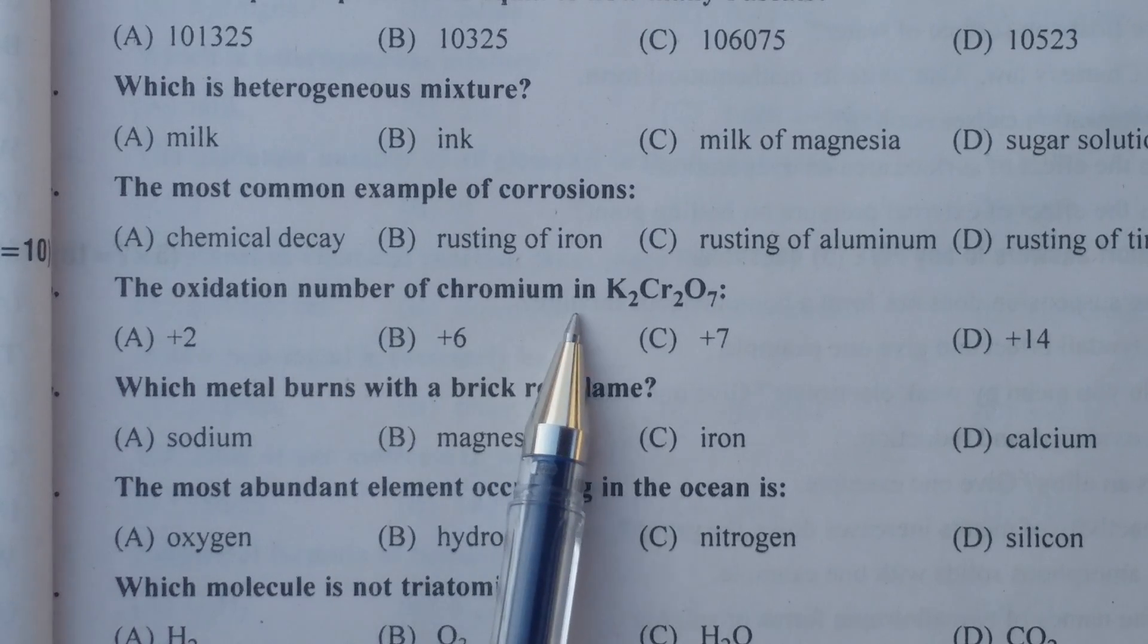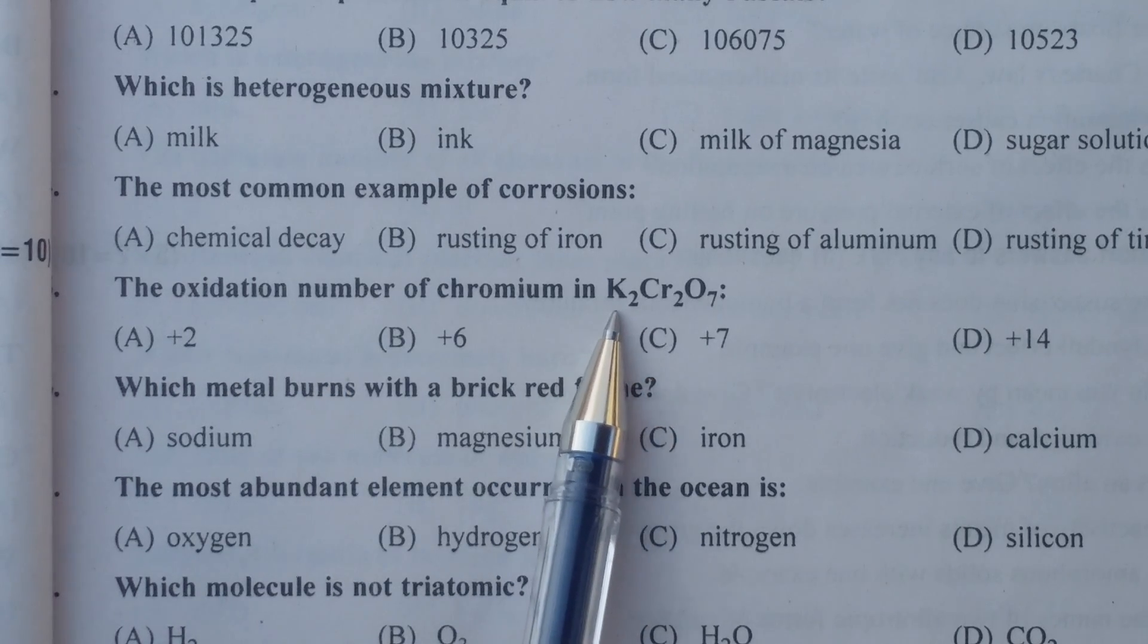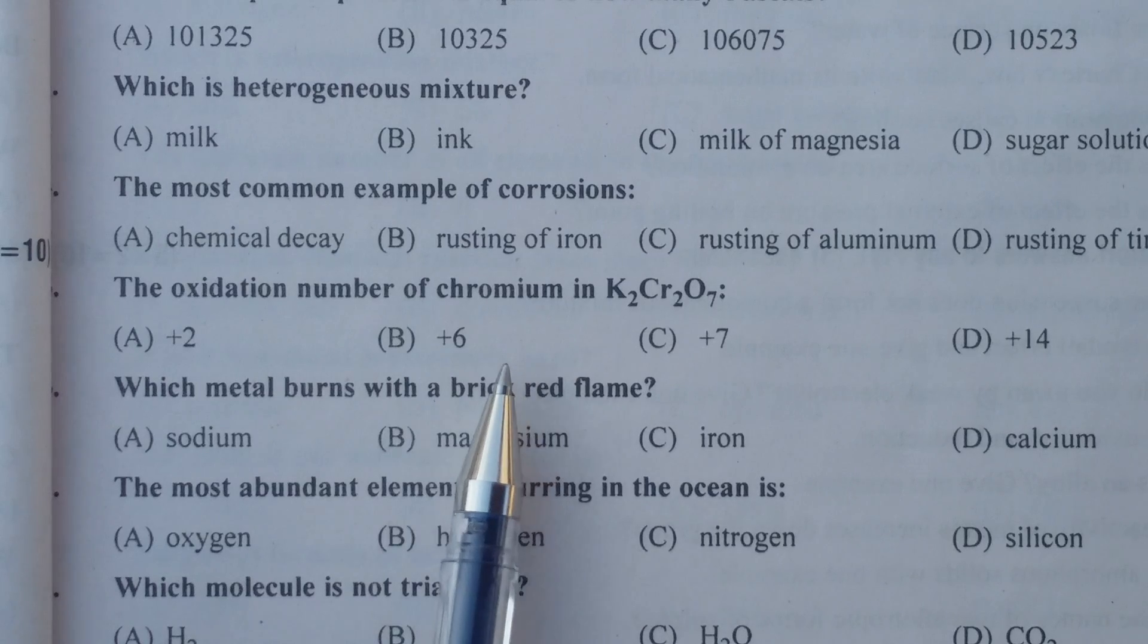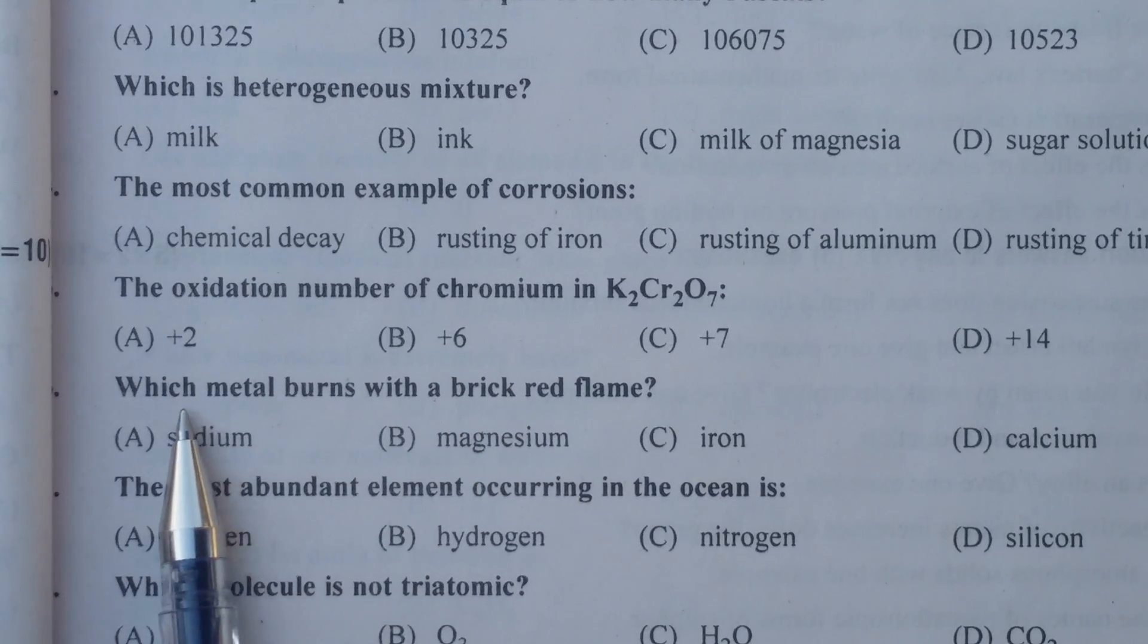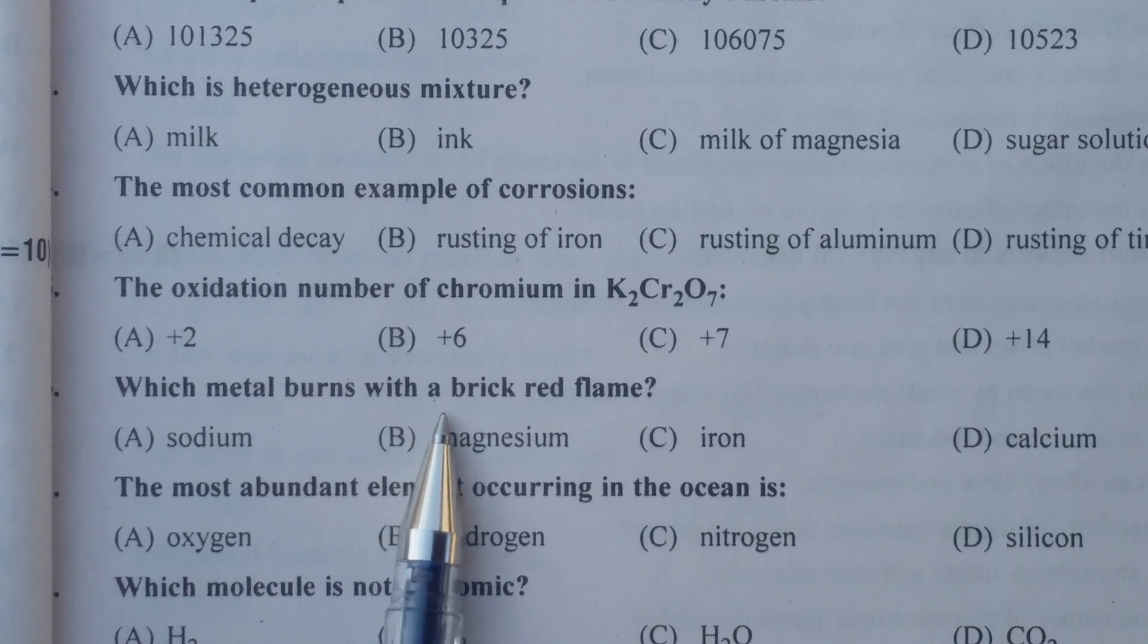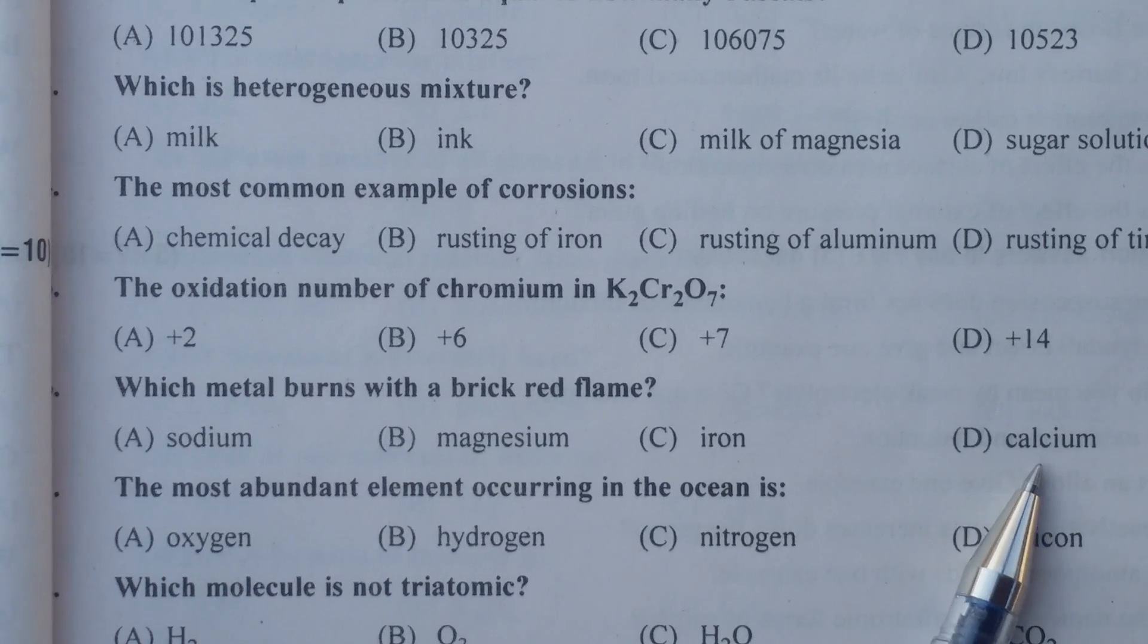The oxidation number of chromium in K2Cr2O7 is plus 6. Which metal burns with a brick red flame? Calcium.